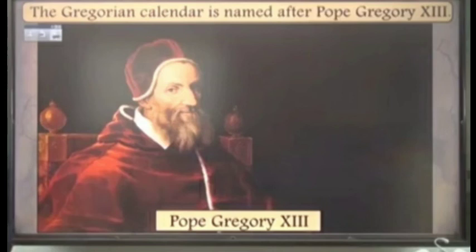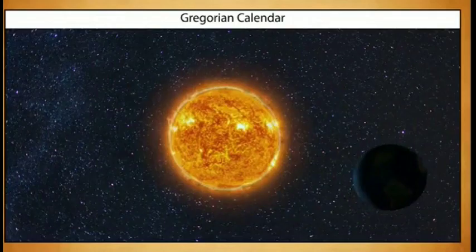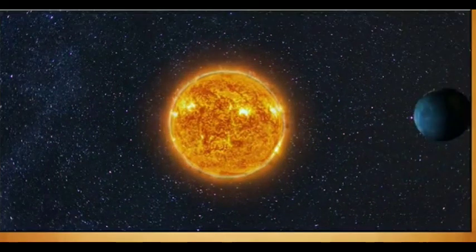So the Gregorian calendar was introduced by Pope Gregory XIII in October 1582. You can see the picture of Pope Gregory XIII. In which year? 1582. Who introduced it? Pope Gregory XIII. It is a solar calendar, because it is based on the revolution of Earth around the Sun. So it is called a solar calendar.